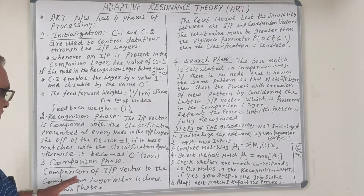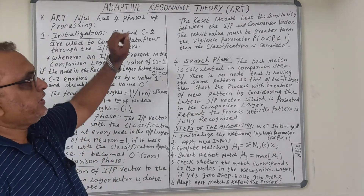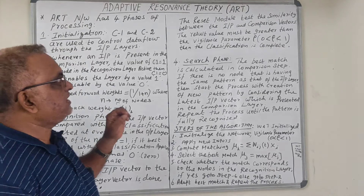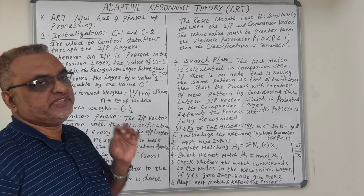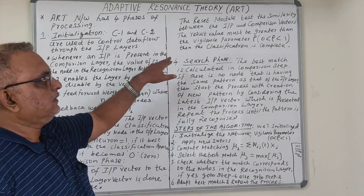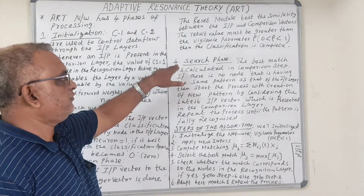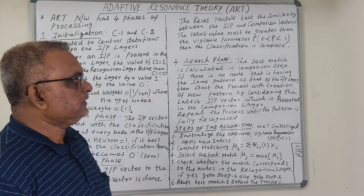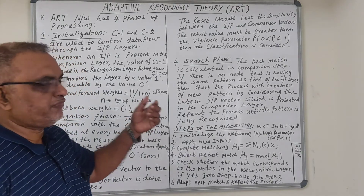The third phase is the comparison phase, where the input vector is compared to the comparison layer vector. A reset module tests the similarity between the input and comparison vectors. The result value must be greater than the vigilance parameter rho, whose value ranges between 0 and 1. If satisfied, classification is complete; otherwise, we proceed to the fourth phase, the search phase, where the best match is calculated.